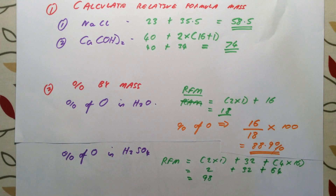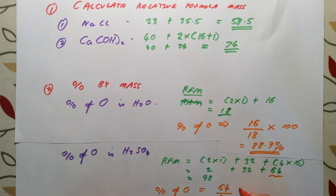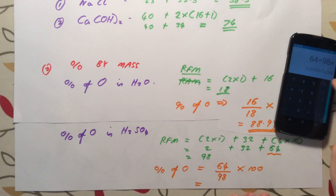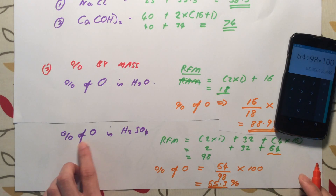Now we need to work out the percentage that oxygen atoms contribute. The total mass oxygen contributes is 64 — bear in mind you have 4 oxygen atoms, you must include all 4 of them. The total relative formula mass of H₂SO₄ is 98. So 64 divided by 98 times 100 gives us a final answer of 65.3%. That is our percentage by mass of oxygen in H₂SO₄.